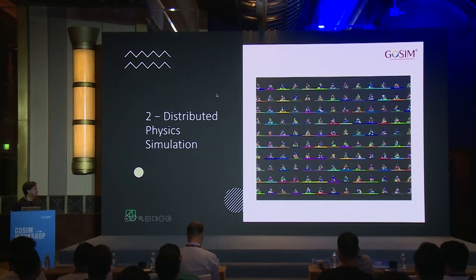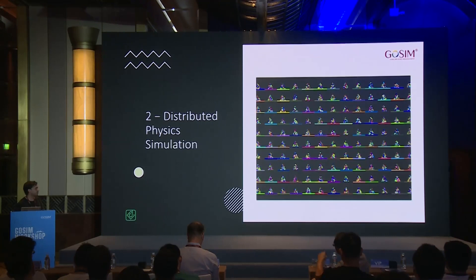That was Rapier. It has many more features than what I showed — collision groups, continuous collision detection, all sorts of different shapes, etc. You can explore everything in the user guide. Now let's talk about distributed physics.